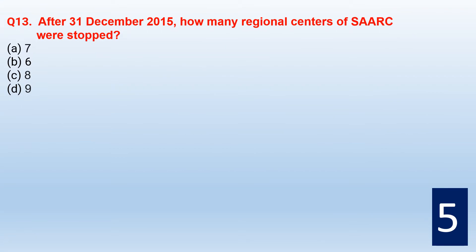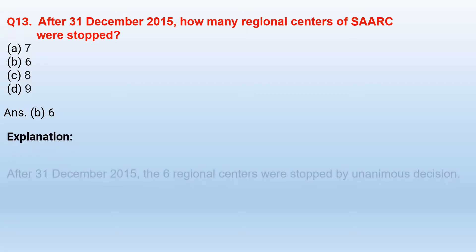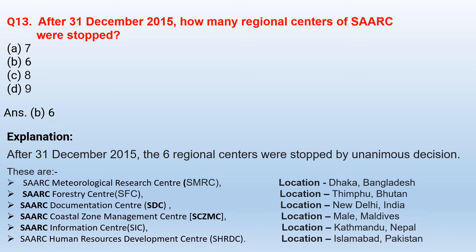After 31st December 2015, how many regional centers of SAARC were stopped? The correct option is option B — 6. After 31st December 2015, 6 regional centers were stopped by unanimous decision. The first was the SAARC Meteorological Research Center, located in Dhaka, Bangladesh.